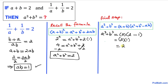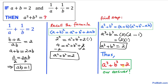So our a³ plus b³ value turns out to be 2. That's our final answer. Thanks for watching and please don't forget to subscribe to my channel for more exciting videos.